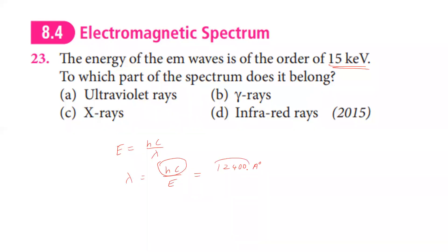To find the wavelength, we use the relation: wavelength in Angstroms equals 12.4 divided by energy in electron volts. For 15 kilo electron volts, that is 15×10³ electron volts, the electron volt units cancel, giving approximately 0.83 Angstroms.